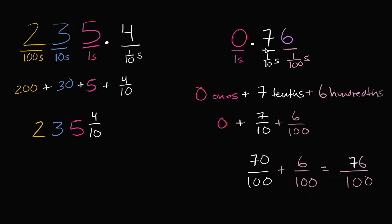This is the hundredths place, and this is the tenths place. But each tenth is worth ten hundredths — you could either view this as seven tenths or as 70 hundredths. So this is 76 hundredths. And you could keep going to the right: if you go one more space, you get to the thousandths place, then the ten thousandths place. You keep dividing by ten each place you go to the right, and you multiply by ten each place you go to the left.